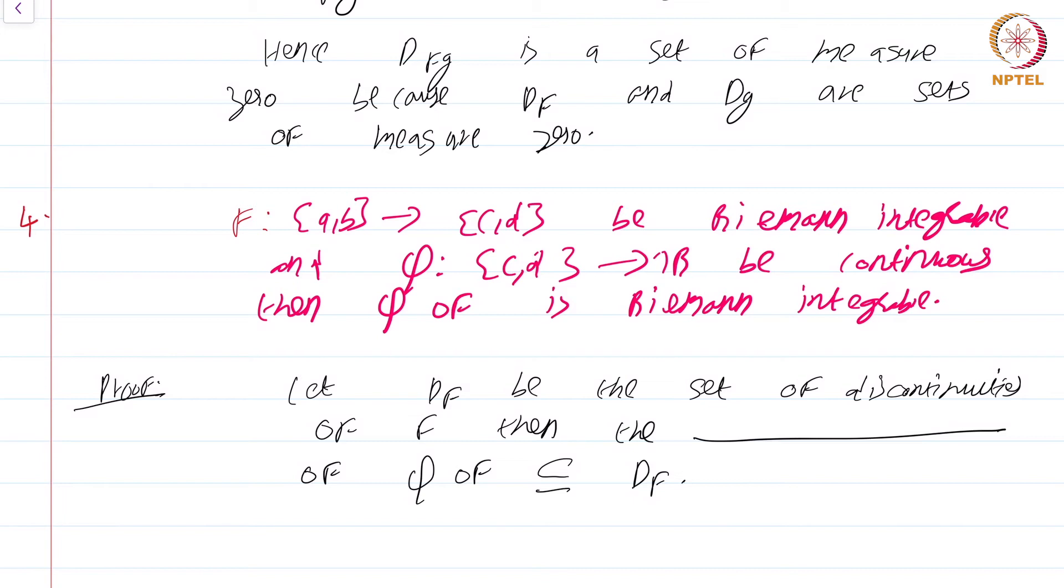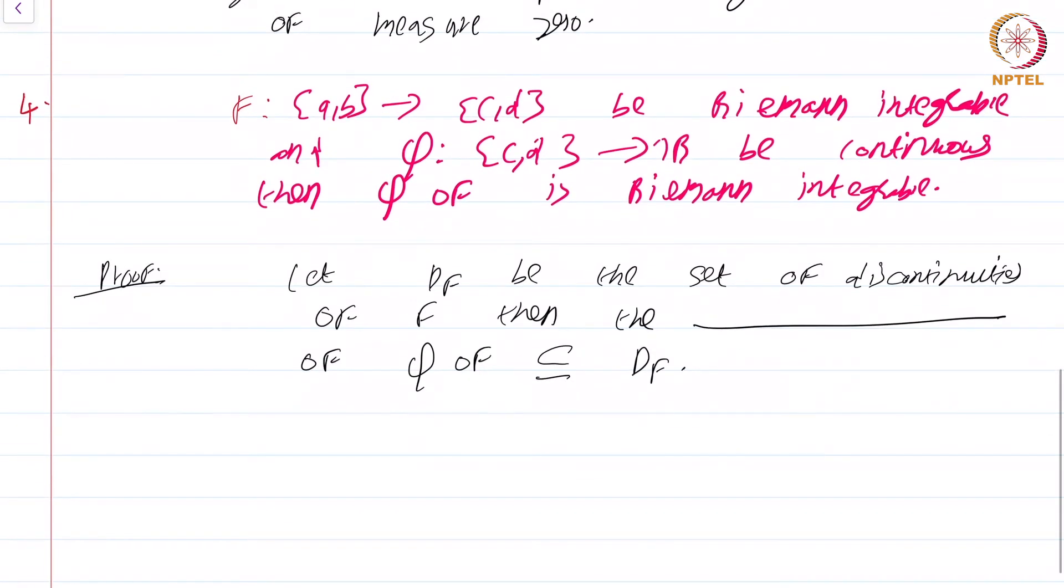So if you take a point of continuity of f, then phi composed f will automatically be continuous at that point. Therefore the only point of discontinuities of phi composed with f will be a subset of D_f. Again think why I write subset and not equal to. And we are done because subsets of measure zero sets are measure zero for the same reason as the previous.